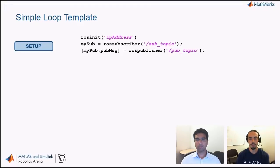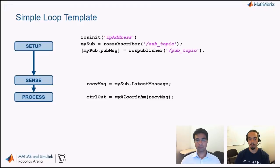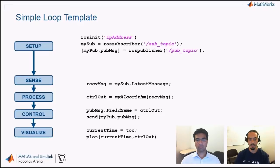Once we have the setup, we enter the control loop. We grab the latest message off of the subscriber. There's also a receive command where you can actually wait for the following message. You then pass it into some algorithm — here we've created something called my_algorithm, which takes in received data and outputs something to send back to your platform. You use the publisher's send command to package up the data into a message and publish it. For visualization, you might plot that control output against current time.